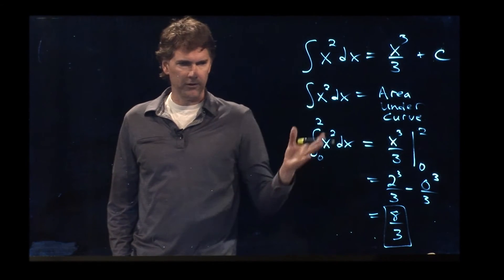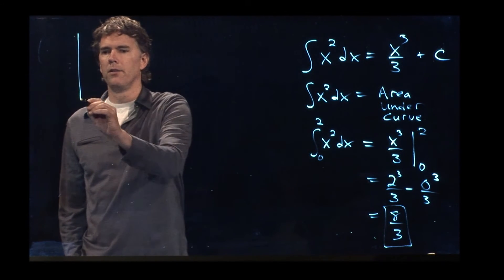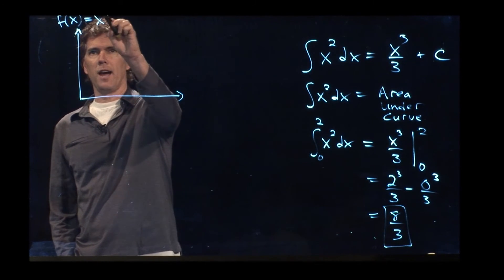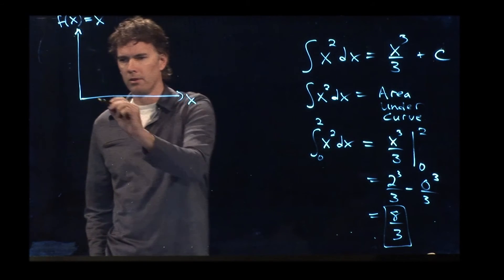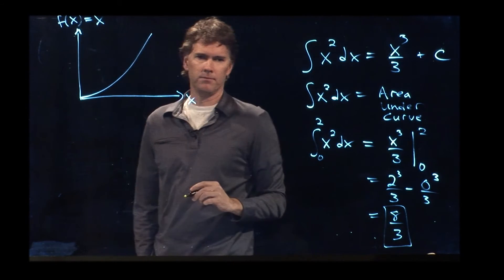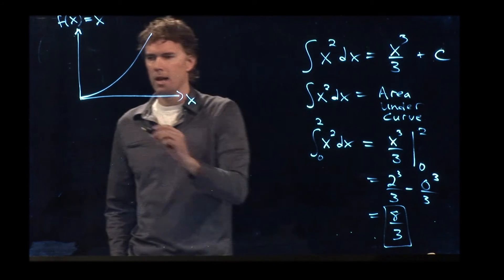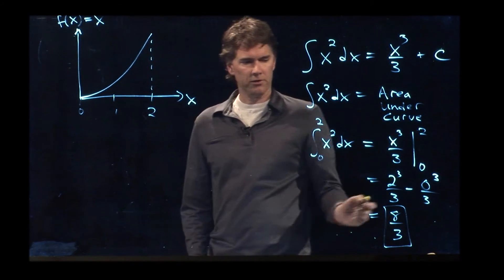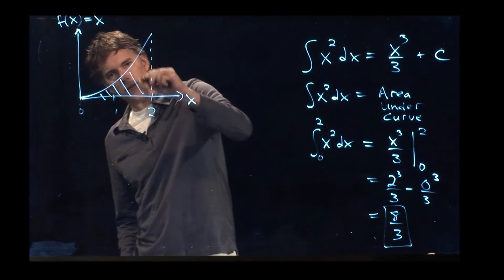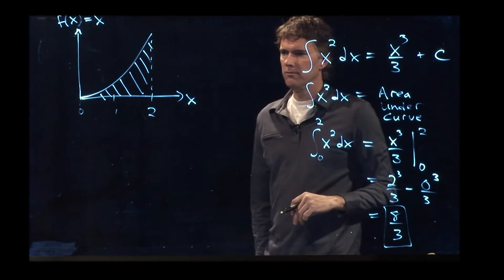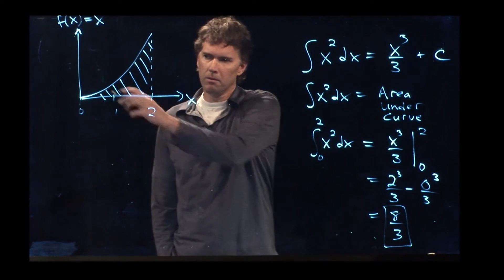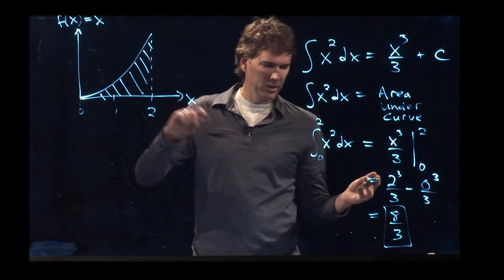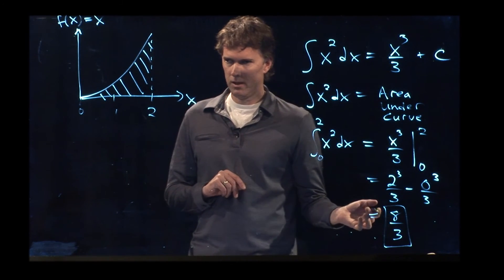But we also said this is the area under the curve. So if I plot out my function, which we said was x squared, as a function of x, you know what x squared looks like. And if I plot this from 0 to 2, what we just calculated is this area right here. If it's a straight line, it's pretty easy to calculate it. But for parabolic trajectories like this, it's a little complicated to calculate it graphically. And so that's why we rely on calculus to tell us the answer. The area here is equal to 8 thirds in the appropriate units.